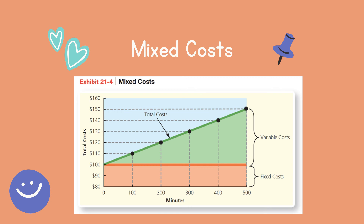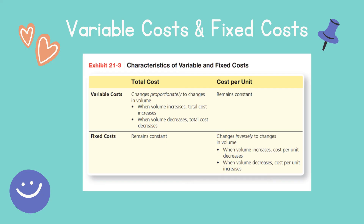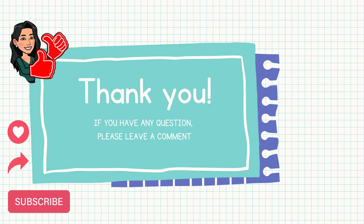To summarize: for variable cost, the cost per unit remains constant, while for fixed cost, the total cost remains constant. Variable cost as a total increases with an increase in volume and decreases when units decrease. For fixed cost per unit, it decreases when volume increases and increases when volume decreases. Thank you for watching — if you have any questions, please leave a comment, and please like, share, and subscribe.